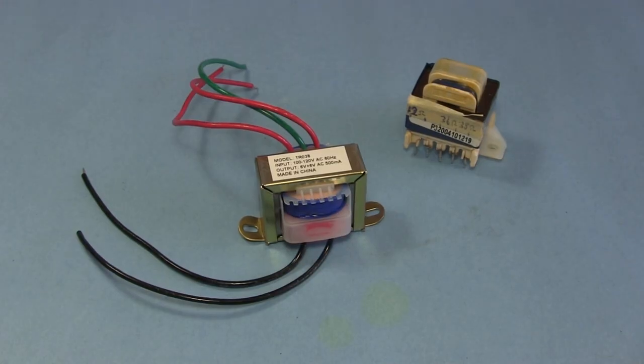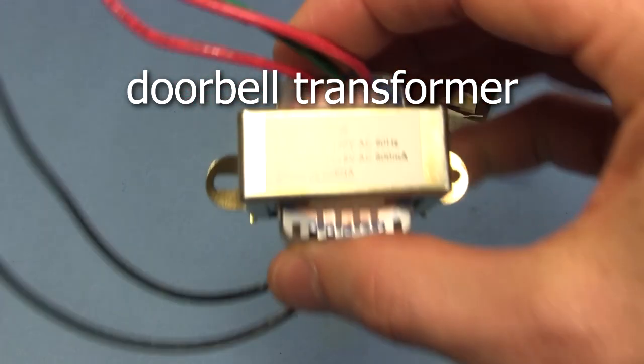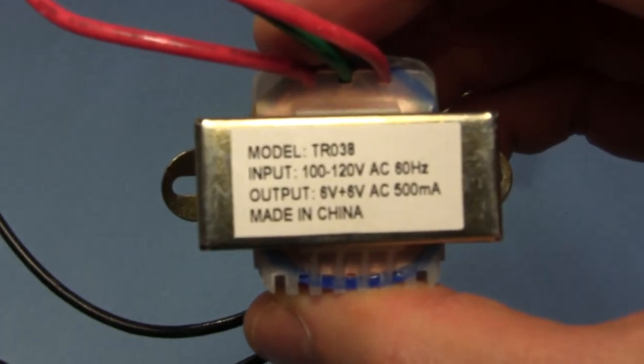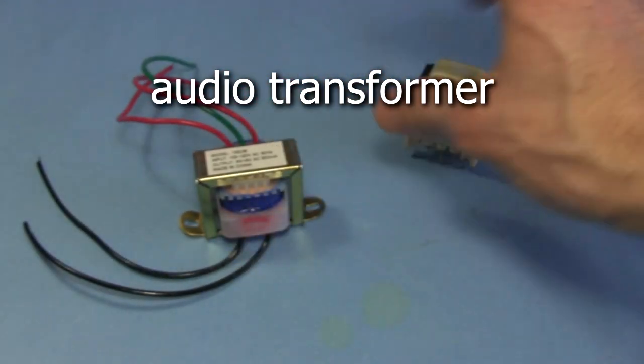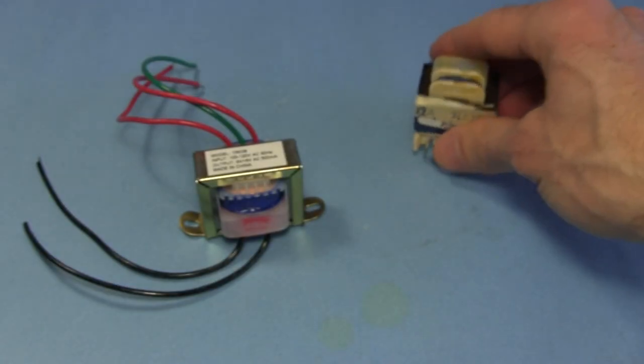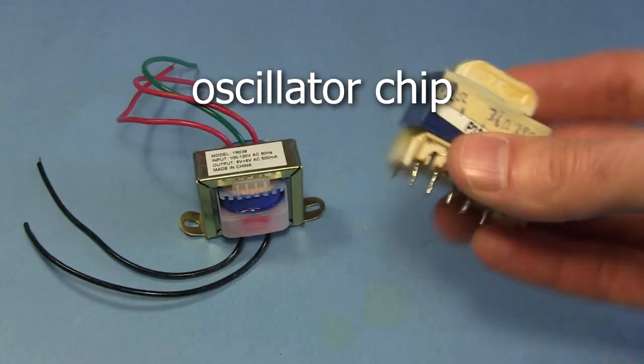Where do you get the transformer? This one is a doorbell transformer which I got from a local electronics store. A lot of places that sell household electrical parts will have it. Even better would be an audio transformer which you can order online, for example from the sci-toys.com website. I'll put a link in the description below this video. And this one I took from a control board inside a microwave oven.